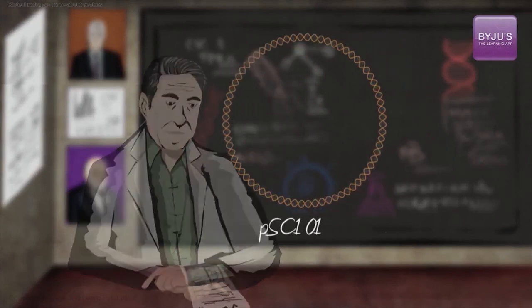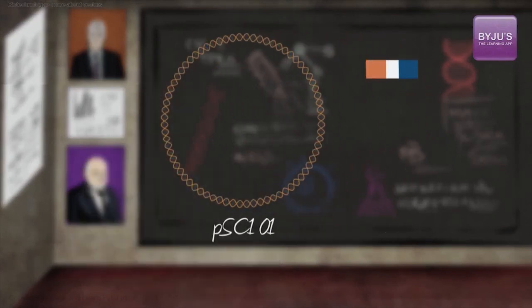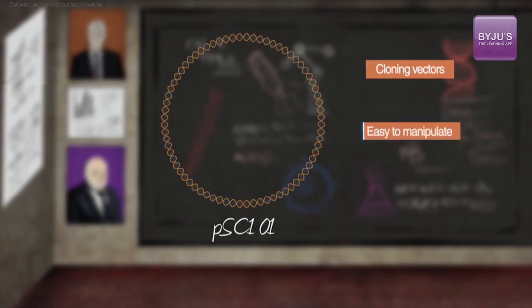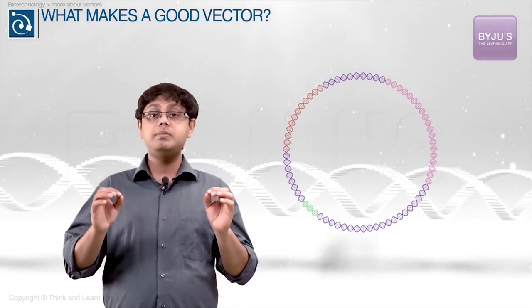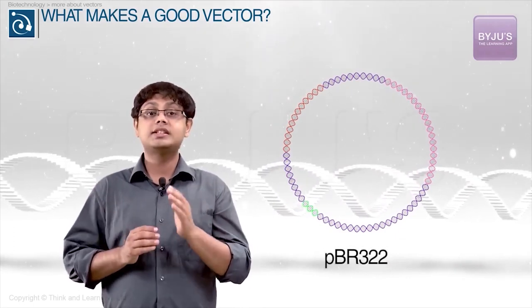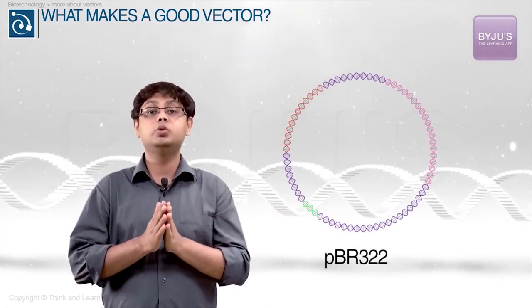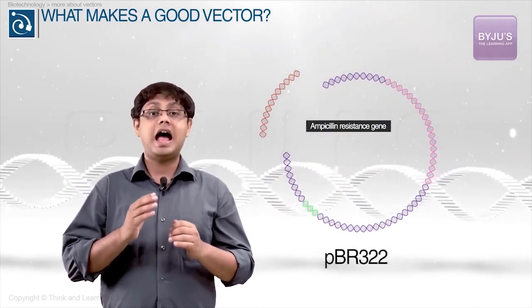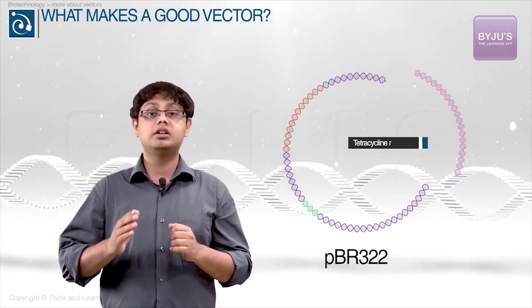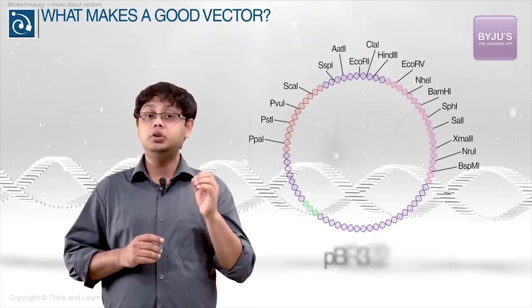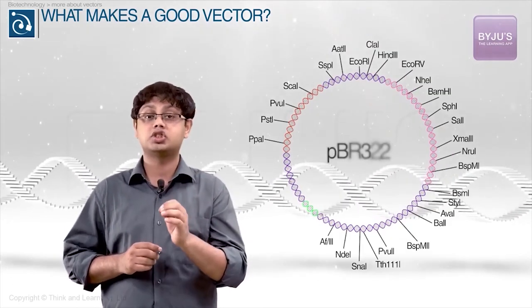Plasmids are still the most commonly used cloning vectors because it is relatively easy to manipulate and isolate plasmids from bacterial cells. One of the first widely used plasmid vectors, called PBR322, was designed to include genes for ampicillin and tetracycline resistance and several useful restriction sites.